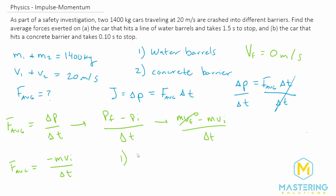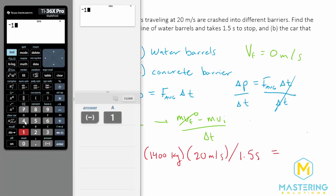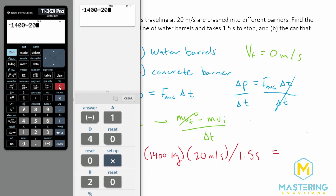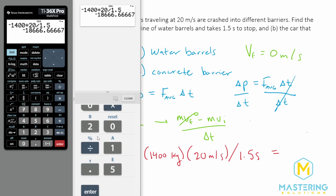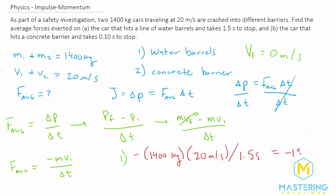For the water barrel scenario, we input our numbers. The mass is 1,400 kilograms, the initial velocity is 20 meters per second, and the time it took to stop is 1.5 seconds. So we have negative 1,400 kilograms times 20 meters per second divided by 1.5, which gives us approximately negative 18,667, so rounding that up gives us negative 19,000 newtons for the water barrels.